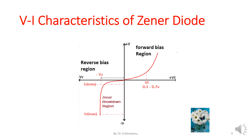Here is the representation of the V-A characteristics of the Zener diode. The Zener diode is a special purpose device used in reverse biased mode. Under the reverse biased mode, after the Zener breakdown region, the output voltage is constant even though the current in the circuit increases. This is indicated in this curve.